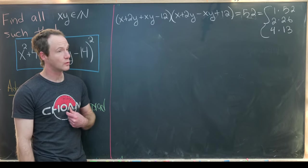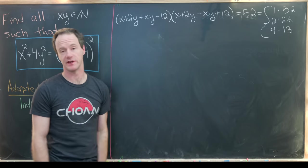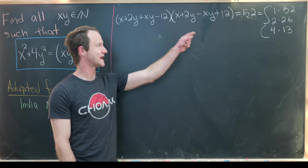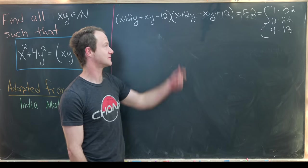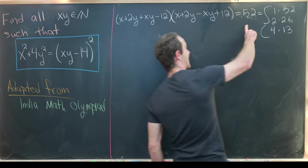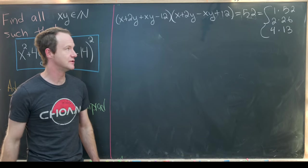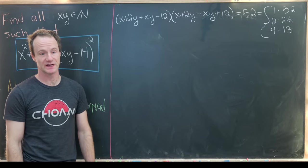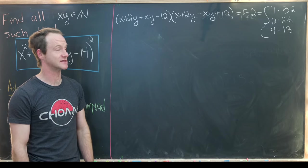On the last board we saw that our given equation is equivalent to the following equation which only has a constant on the right hand side, so that's helpful. We've got a factored object on the left and then we have 52 on the right, but we can factor 52 three different ways: 1 times 52, 2 times 26, or 4 times 13. Now we're going to do a case-by-case analysis of this.